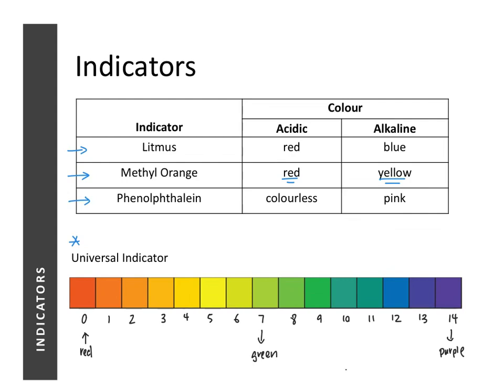For universal indicator, a very low pH (strongly acidic) produces red, a high pH (strongly alkaline) produces purple, and a neutral solution gives green. The variation in colors with pH follows the colors of the visible spectrum — essentially the colors of the rainbow.